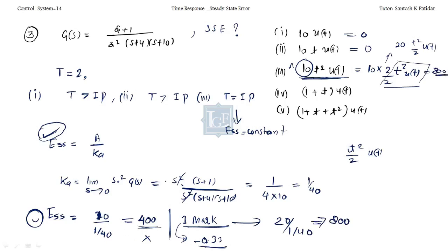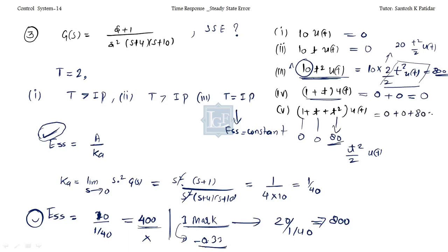For another combined input in problem 3: the first signal gives 0, the second signal gives 0. For the parabola component, first convert to standard format, then calculate the error, which gives 80. So the total is 0 + 0 + 80 = 80.